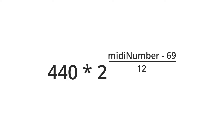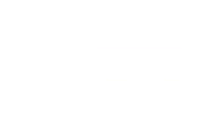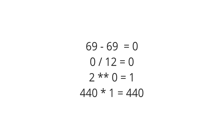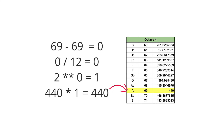Let's take a look at 2 to the power of MIDI number minus 69 divided by 12 and break it down. If we want to get the frequency of MIDI number 69, which we know is our reference note A at 440 Hz: 69 minus 69 is 0. 0 divided by 12 is also 0. 2 to the power of 0 is 1. And 440 times 1 is 440, which we know is correct.